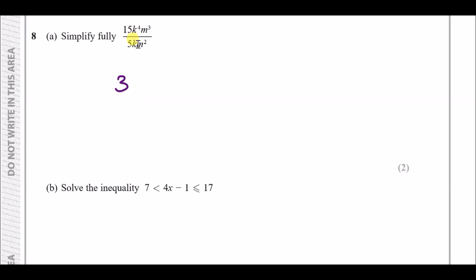Now for k to the power of 4 over k: when dividing terms you subtract the powers. Think of k as having a power of 1, so 4 take away 1 is 3, leaving k to the power of 3.